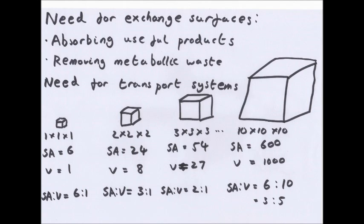Small organisms do not need exchange surfaces or transport systems such as the circulatory system, but larger organisms do. The reason for this is the classic cube example. A cube with length one has a surface area of six and a volume of one, giving a surface area to volume ratio of six to one. If you increase the length to two you get a ratio of three to one, and if it's three the ratio becomes two to one.